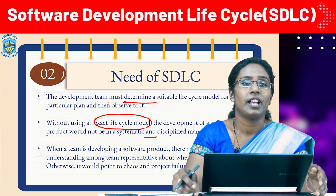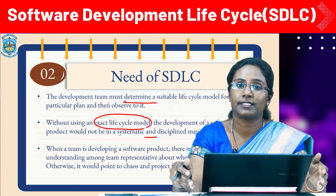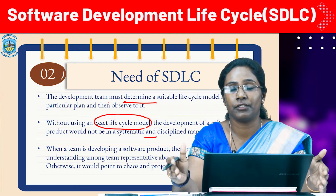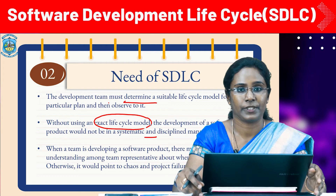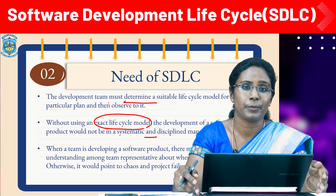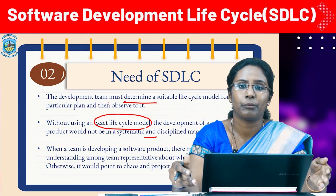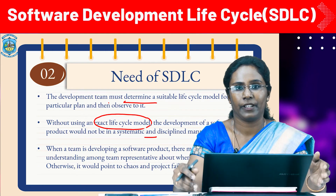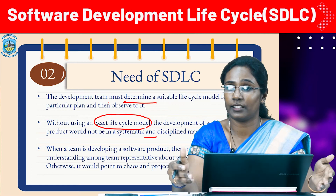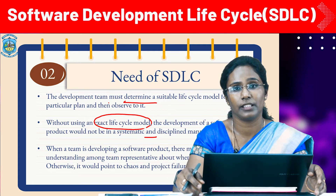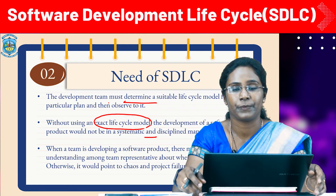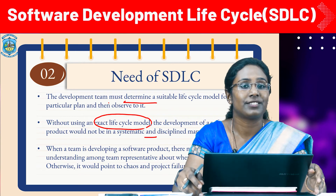For example, suppose a software development issue is divided into various parts and the parts are given to different team members. Now suppose the team representatives are given the freedom to develop the roles assigned to them in whatever way they like. One team member may start designing the product, another may choose to code the product, while another may start with testing the product. This will definitely lead to project failure.